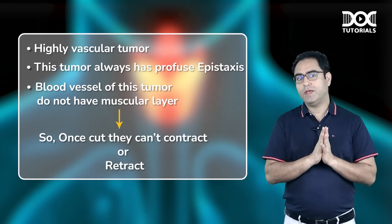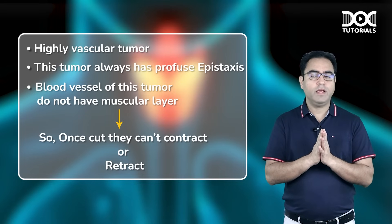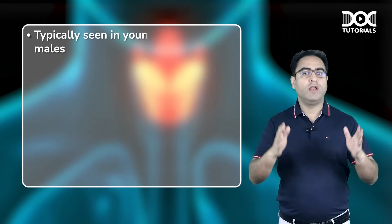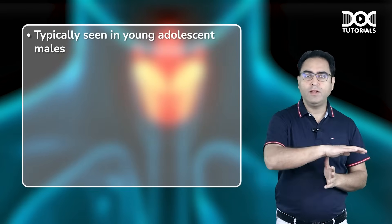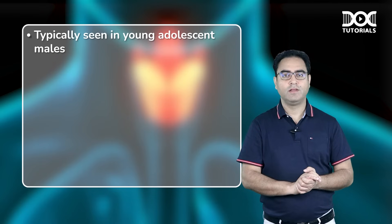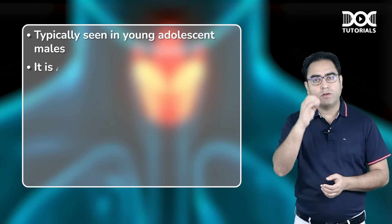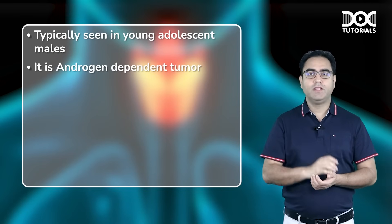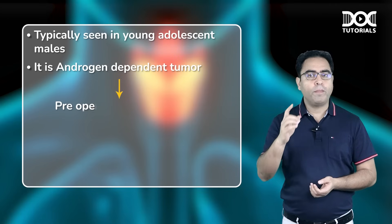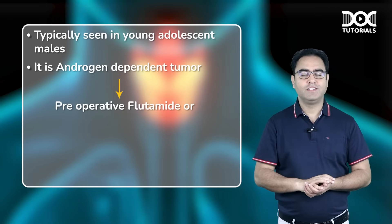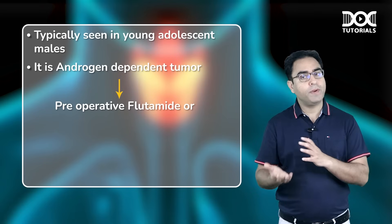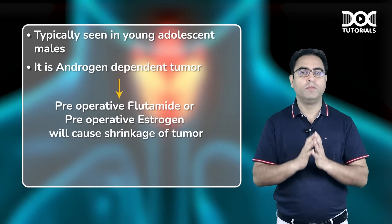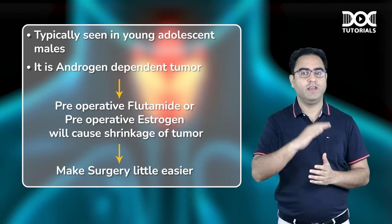Angiofibroma is typically seen in young adolescent males aged 12 to 18 years, meaning it is an androgen-dependent tumor. Therefore, pre-operative flutamide (anti-androgen) or pre-operative estrogen will cause shrinkage of the tumor and make surgery easier.